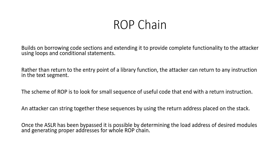An attacker can string together the sequences by using the return address placed on the stack. Once ASLR has been bypassed, it is possible to determine the load address of the desired module and generate proper addresses for the whole ROP chain.